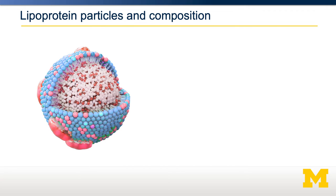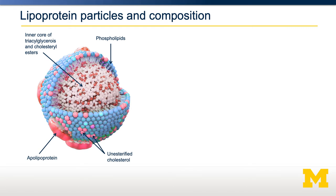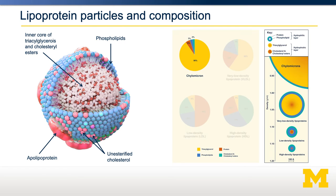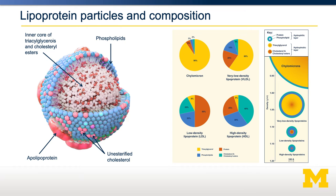Shown here is what an average lipoprotein might look like. They're coated by a phospholipid — an amphipathic barrier that allows for the solubilization of the neutral lipid core containing triglycerides and cholesterol esters. They also have proteins on the surface called apolipoproteins, such as ApoB100 or ApoB48, which dictate the actual function of the lipoprotein particles. Chylomicrons are very large and tend to be mostly triglycerides. VLDL have a little bit less triglycerides and are quite a bit smaller. LDL has much less triglycerides, relatively larger amounts of cholesterol, and is much smaller and much more dense.